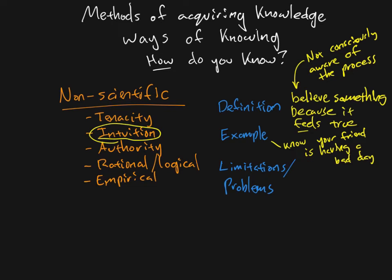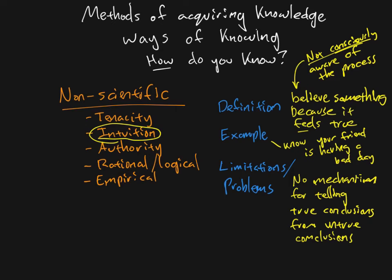But it does have limitations. The limitations come from this fact that it's not conscious. So there is, in the book, the way they say this is, there is no mechanism for telling true conclusions from untrue conclusions. In other words, yes, there are other ways, not intuition, not the method of intuition, that there are other ways that you can tell whether your intuition was correct. You can make observations, you can reason through things logically, you can gather some evidence to see if your intuitions were correct. But those are not part of intuition itself. So the idea is, what they're trying to show you is, you cannot just use intuition to get through life if you really want to have an accurate understanding of what's happening in the world.